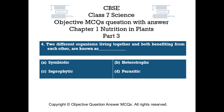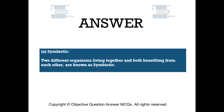Question number 4. Two different organisms living together and both benefiting from each other are known as. Option A: Symbiotic. Option B: Heterotrophs. Option C: Saprophytic. Option D: Parasitic. The right answer is option A: Symbiotic. Two different organisms living together and both benefiting from each other are known as symbiotic.